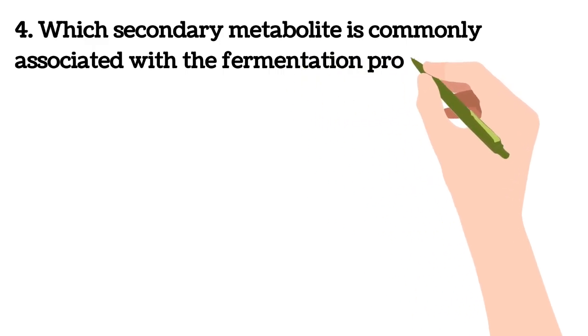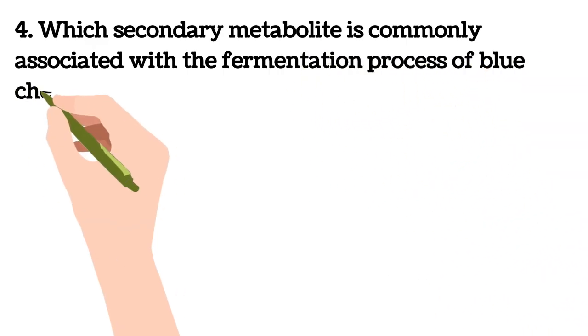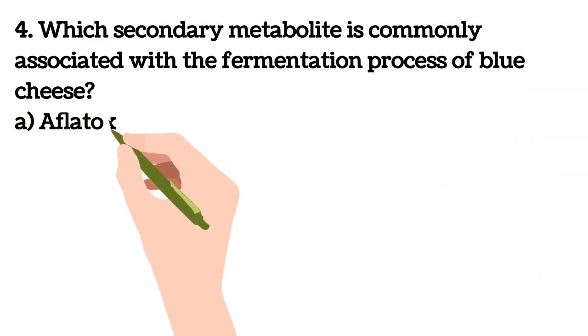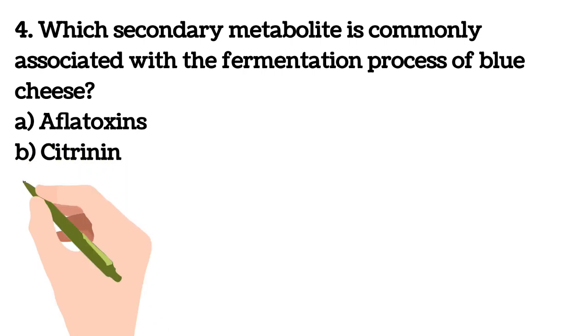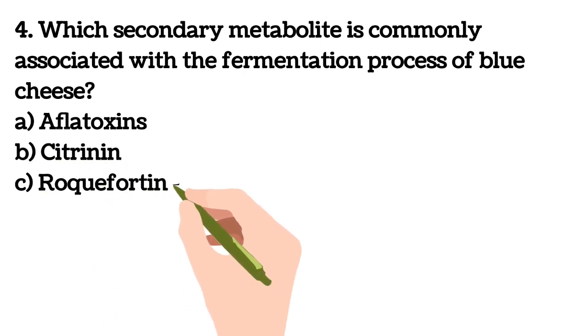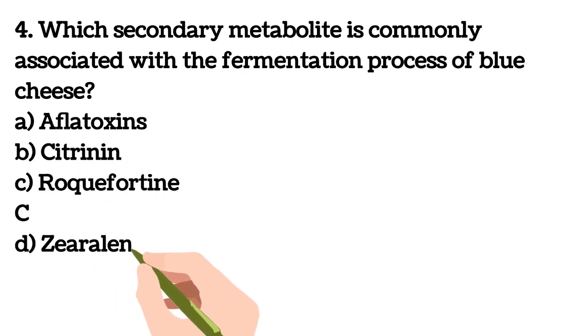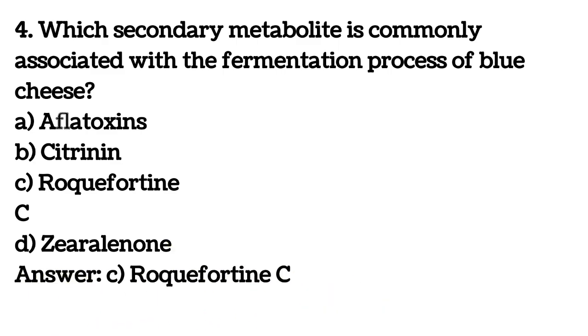Fourth question: which secondary metabolite is commonly associated with the fermentation process of blue cheese? A) Aflatoxins, B) Citrinin, C) Roquefortine C, D) Zearalenone. Your answer is C, Roquefortine C.